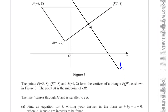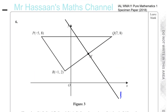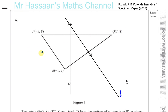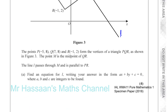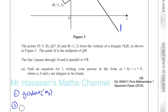We're asked to find the equation for the line L, writing our answer in the form Ax plus By plus C equals 0. To find the equation of a line, we need to know two things: the gradient of the line, and any point on the line.